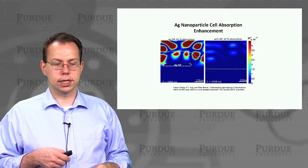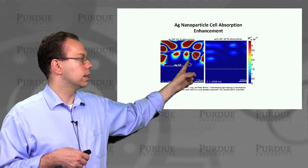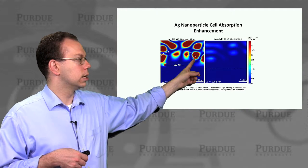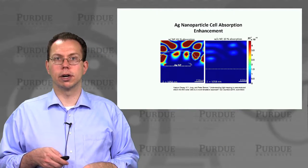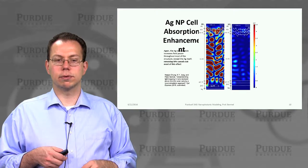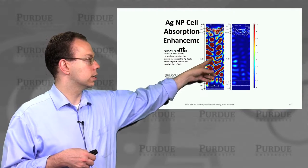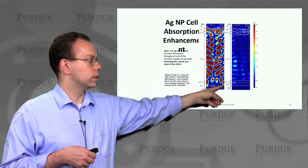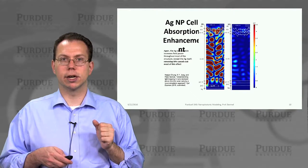Zooming in again on the field enhancement, you can see that the field enhancement with the nanoparticle is very strong. Without the nanoparticle it's actually orders of magnitude smaller, so this is a really strong significant effect. Looking at it zoomed out, you can see that there's a big enhancement over the whole volume of the crystalline silicon, which might be like two microns thick.